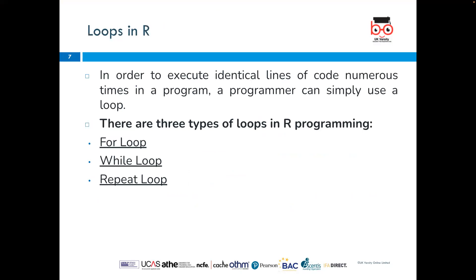What are loops in R? In order to execute identical lines of code numerous times in a program, a programmer can simply use a loop. There are three types of loops in R programming: for loop, while loop, and repeat loop.